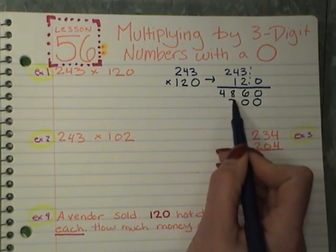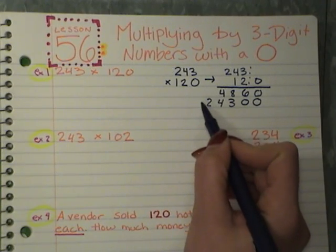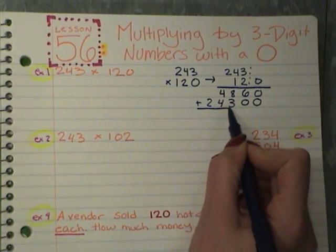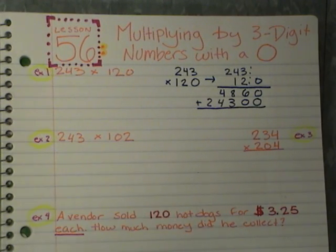1 times 3 is 3, 1 times 4 is 4, 1 times 2 is 2. And like you've noticed, when you do these problems, make sure that you keep all of your numbers in a straight line, because once they get out of order, it's really hard to add them, and that's where some of your mistakes come from.